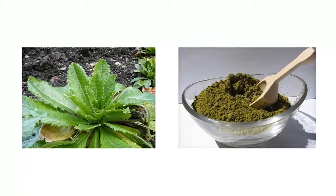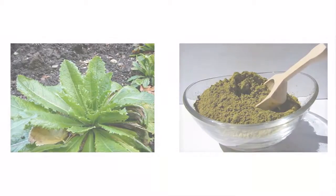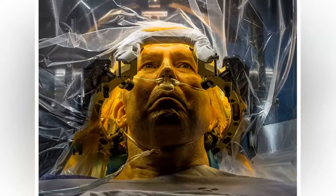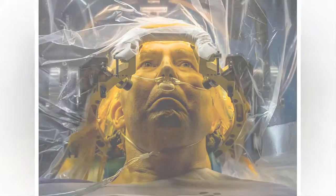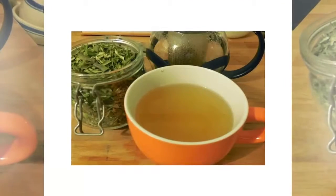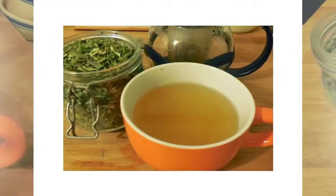High blood pressure: Henna is a boon in this problem. Grind henna leaves and place them on the soles of your feet and hands. Grind 50 grams of henna leaves in half a liter of water and boil them. When 100 grams of water remains, then filter it and drink it.